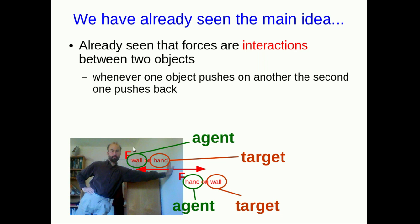These pairs of forces are called interaction pairs. So the force that my hand exerts on the wall and the force that the wall exerts on my hand are the two forces resulting from the interaction between my hand and the wall, and we say that these two forces form an interaction pair.